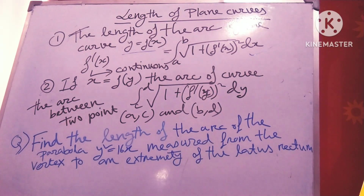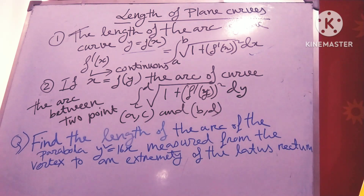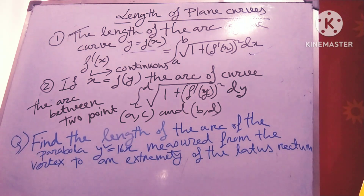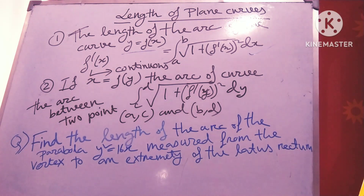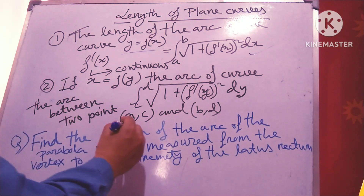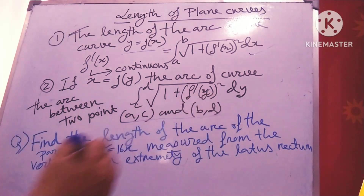The length of the arc of curve y = f(x) is equal to the integral from a to b of root over 1 plus f'(x) whole square dx, where f'(x) is continuous. And if x = f(y), the arc of curve is from c to d of root over 1 plus f'(y) whole square dy, between two points (a,c) and (b,d).